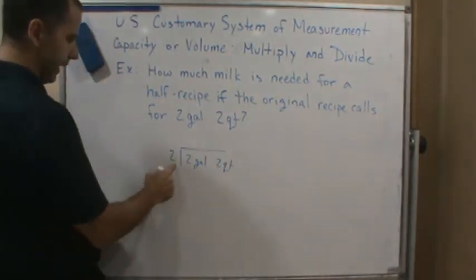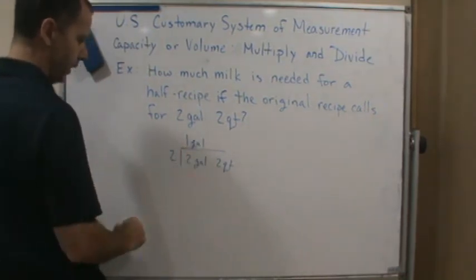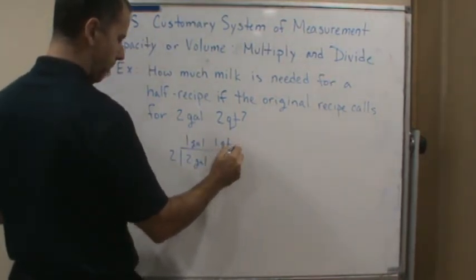So I'm going to take half of two gallons, which is one gallon, and then half of two quarts is one quart.